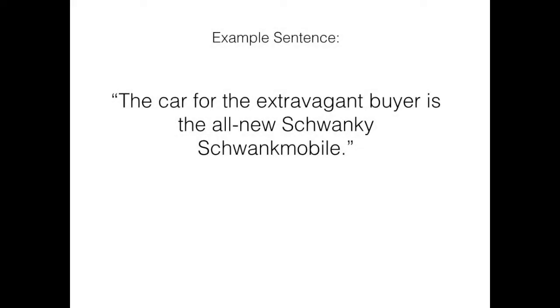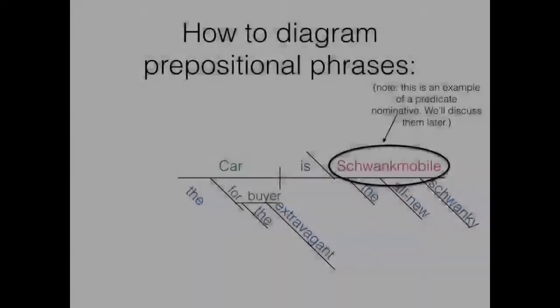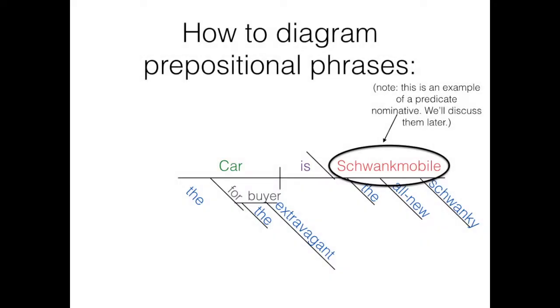For example, in the sentence, 'the car for the extravagant buyer is the all-new schwenky schwenkmobile,' the prepositional phrase is for the extravagant buyer. For is the preposition, buyer is the object, and the other words are adjectives modifying buyer, telling us what kind of buyer. The phrase as a whole modifies the noun car, so we diagram it as coming off of car. The whole sentence looks something like this.